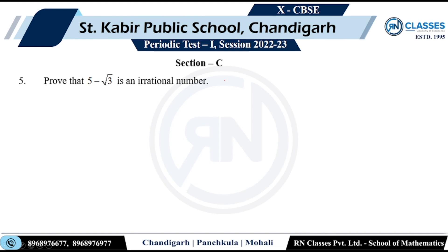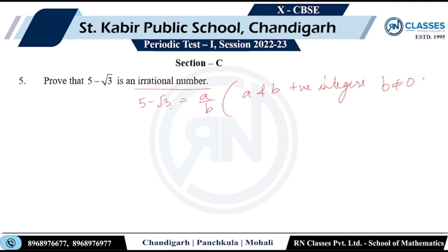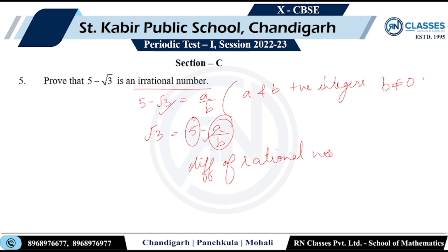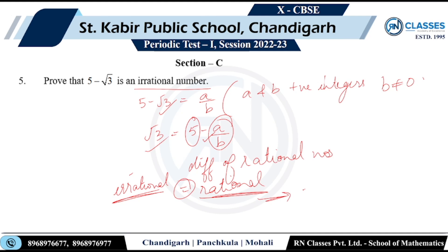Now prove that π − √3 is an irrational number. Assume it is rational. Then it can be written as a/b, where a and b are positive integers and b ≠ 0. Isolating √3: √3 = π − a/b. Now π is irrational and a/b is rational, so their difference is irrational. But we said √3 equals a rational number — contradiction. Since the assumption is wrong, π − √3 is irrational.